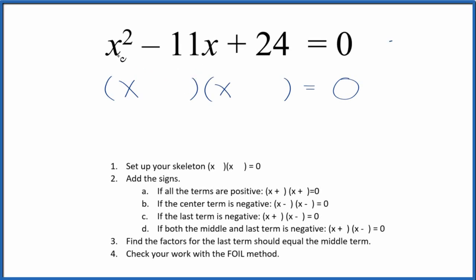Okay, let's factor the equation x squared minus 11x plus 24. We'll start with the skeleton equation. Once we have that skeleton, we can put the signs in the skeleton.